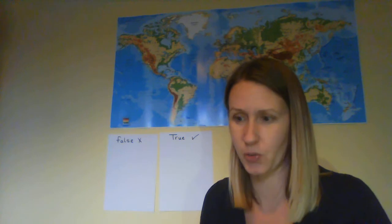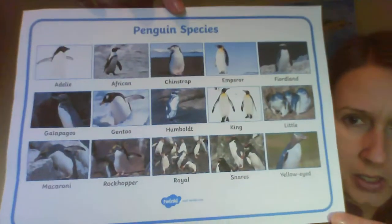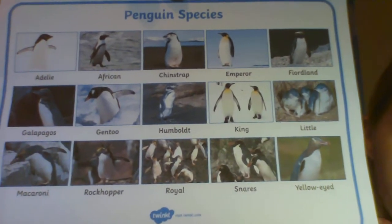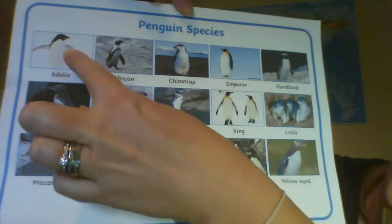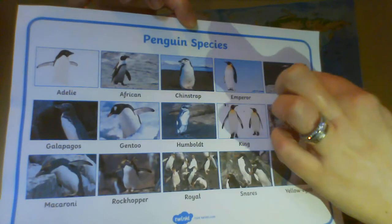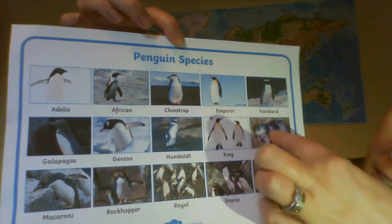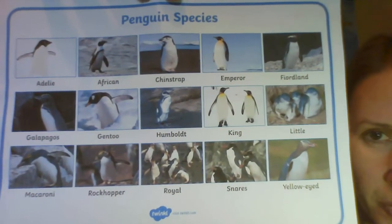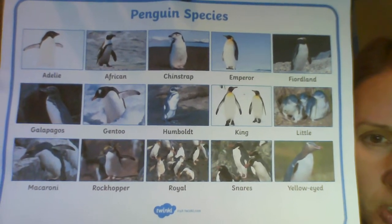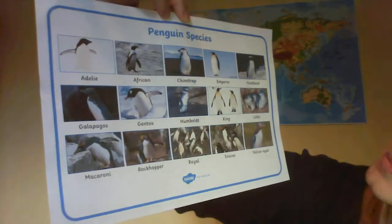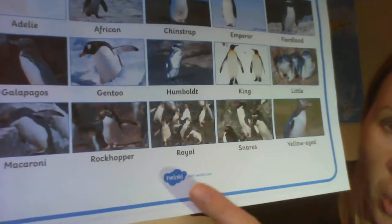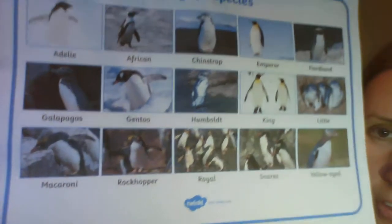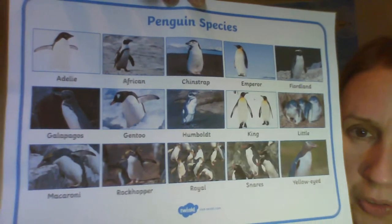Now, do you know how many different penguins there are? Look at all these penguins! Let's count: one, two, three, four, five, six, seven, eight, nine, ten, eleven, twelve, thirteen, fourteen, fifteen. Which one is your favorite? It's very difficult to choose. I quite like the rockhopper - can you see? He's got funny feathers on his head. I wonder if you can choose your favorite.